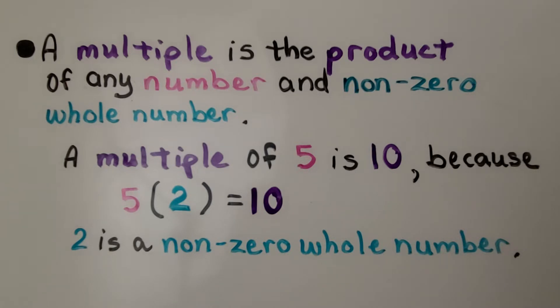A multiple of 5 is 10 because 5 times 2 is equal to 10 and 2 is a non-zero whole number.